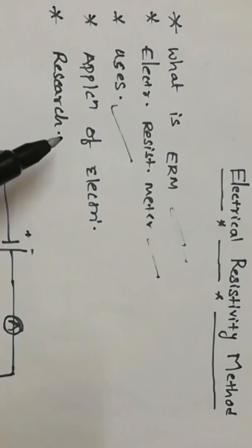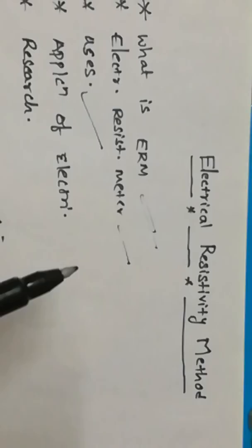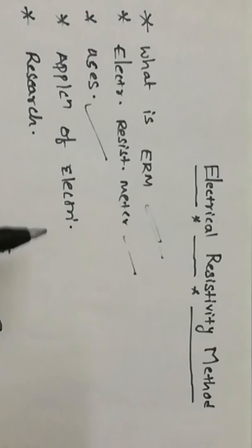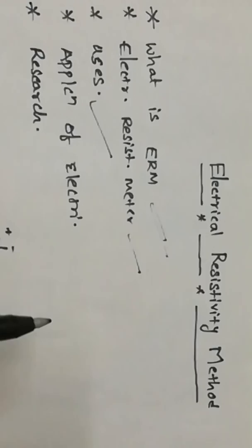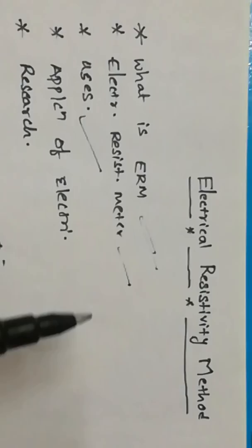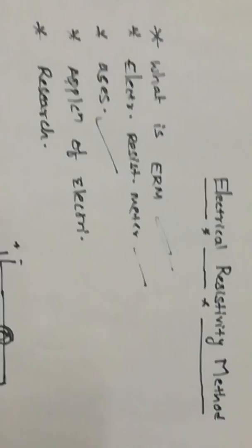Basically, electrical resistivity method is a surface geophysical method. It helps us to know the subsurface ground profile. The subsurface ground profile can be measured by many ways — many subsurface methods are there, like seismic method, magnetic methods, gravity methods, and this electrical resistivity method. It uses the electrical resistivity meter as an instrument and it helps us to get the profile of the soil.